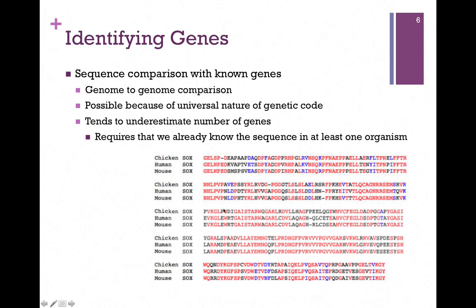and this is an alignment of the amino acid sequence, and you can see they're very similar. So if we institute this kind of comparison and we find a similar gene in a different organism, likely they have the same function. This restricts us, though, because it requires that that gene has been sequenced in at least one other organism, and so there's a tendency to underestimate the number of genes in this case.